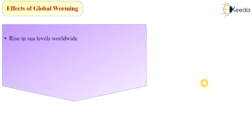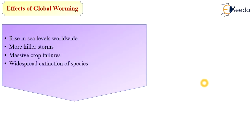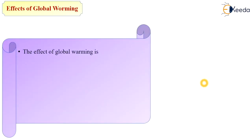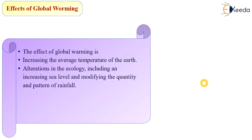What are the effects of global warming? These include rise in sea level worldwide, more killer storms, massive crop failure, widespread extinction of species, and disappearance of coral reefs. The effects of global warming include an increase in the average temperature of the earth, alteration in ecology including rising sea levels, and changes in the quantity and patterns of rainfall.